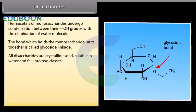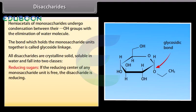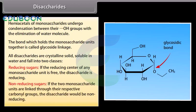All disaccharides are crystalline solids, soluble in water, and fall into two classes. Reducing sugars: if the reducing center of any monosaccharide unit is free, the disaccharide is reducing. Non-reducing sugars: if the two monosaccharide units are linked through their respective carbonyl groups, the disaccharide would be non-reducing.